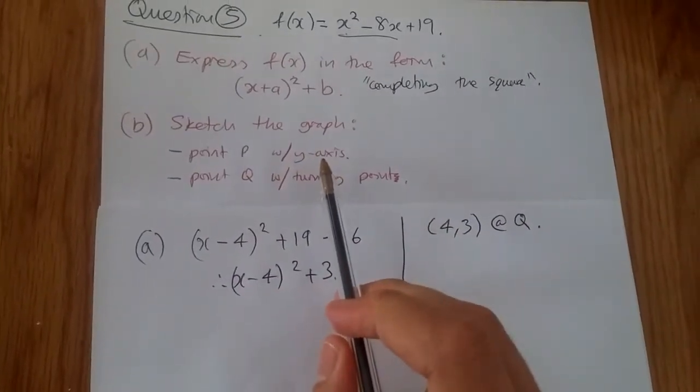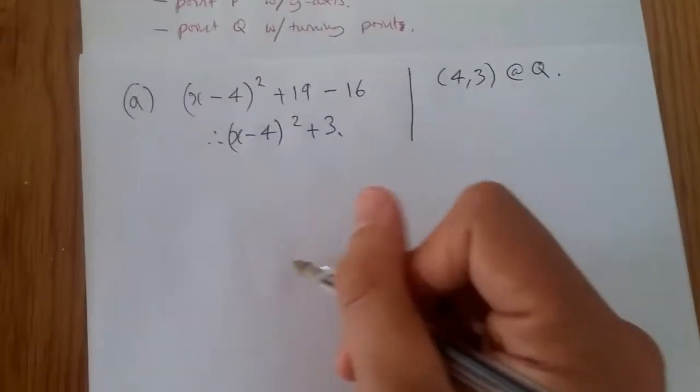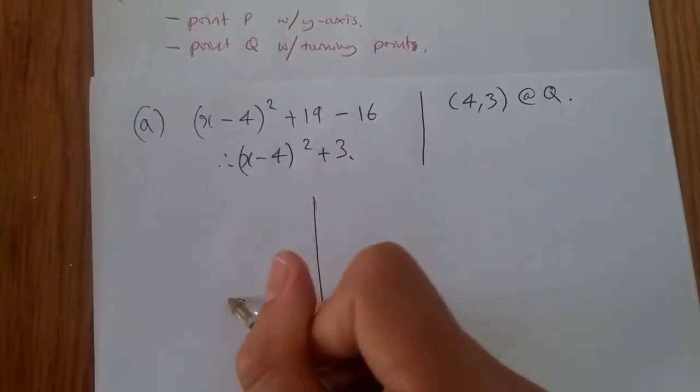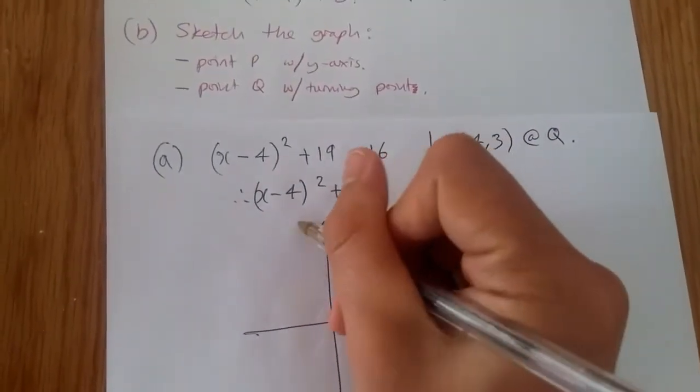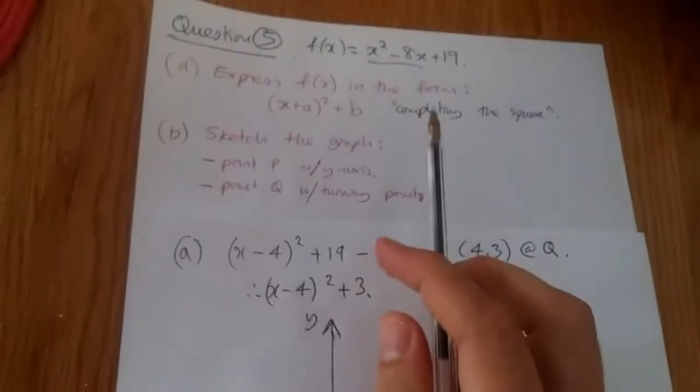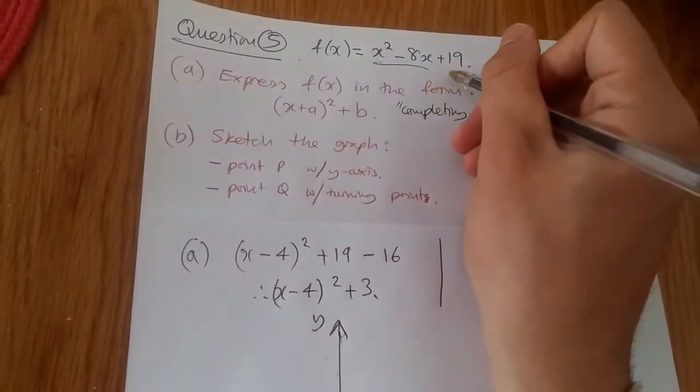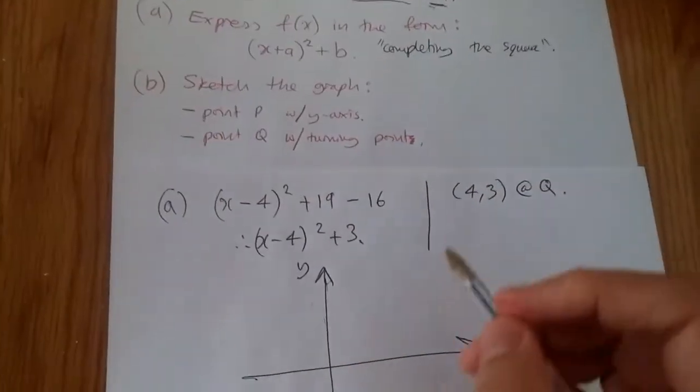At point P, when it crosses with the y-axis, all that means, let's have a go. Is this point here. So crossing the y-axis, we should know that the intercept here is given right at the beginning, which is plus 19. And that's it.